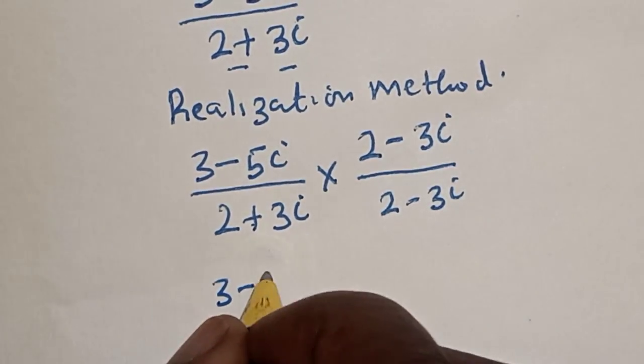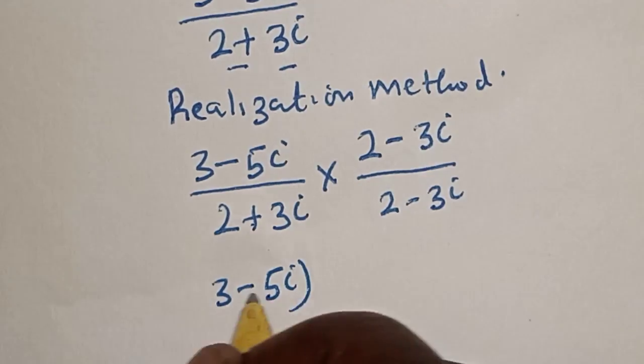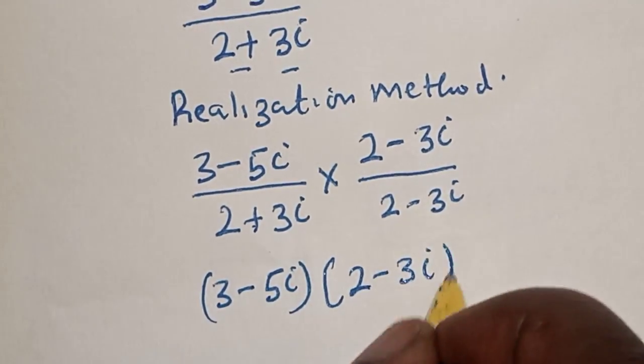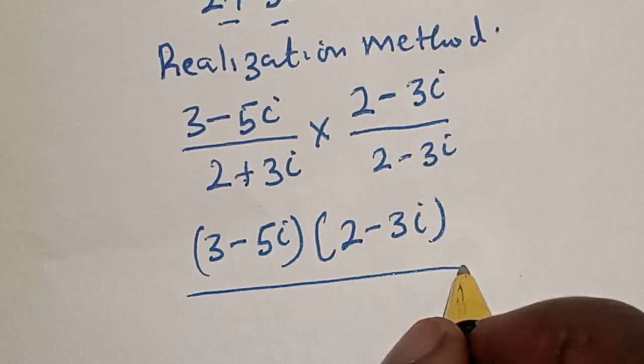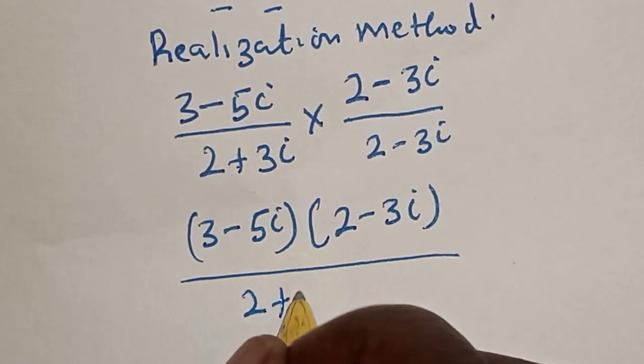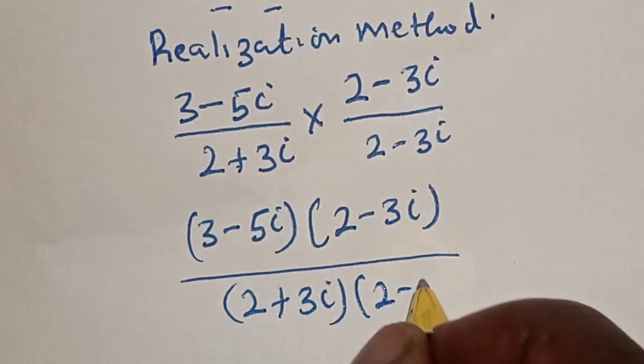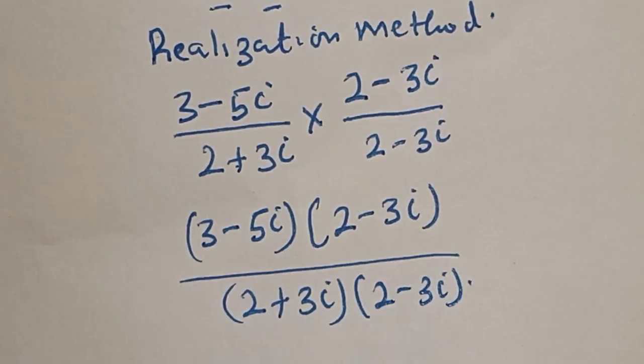Then, this is 3 minus 5i multiplied by 2 minus 3i divided by 2 plus 3i multiplied by 2 minus 3i.